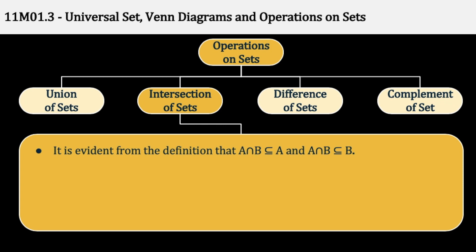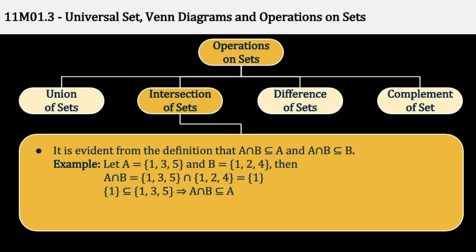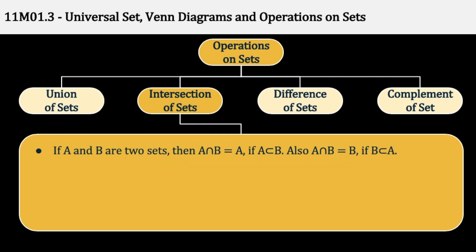It is evident from the definition that A Intersection B is a Subset of A, and A Intersection B is a Subset of B. इसको Example से देखते हैं: Let A be {1, 3, 5} and B be {1, 2, 4}, then A Intersection B हो जाएगा {1}, which is a Subset of {1, 3, 5}, जिससे हम कह सकते हैं A Intersection B is a Subset of A. Similarly, {1} is a Subset of {1, 2, 4}, जिससे हम बोल सकते हैं कि A Intersection B is a Subset of B.